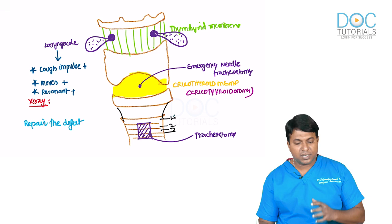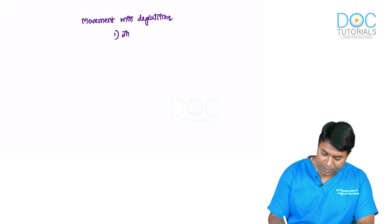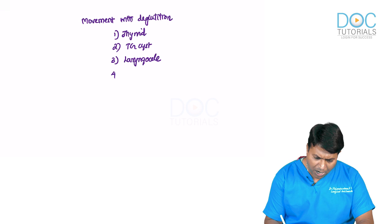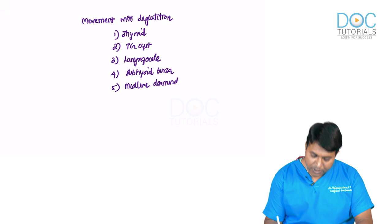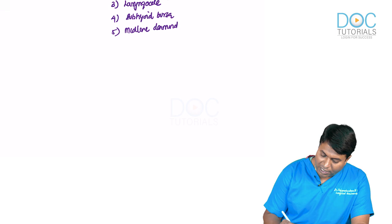Swellings that move with deglutition — an important MCQ: thyroid swelling moves with deglutition; thyroglossal cyst moves with deglutition and with protrusion of the tongue; laryngocele moves with deglutition; subhyoid bursa moves with deglutition; midline dermoid moves with deglutition. Laryngocele can be identified by its movement with deglutition.